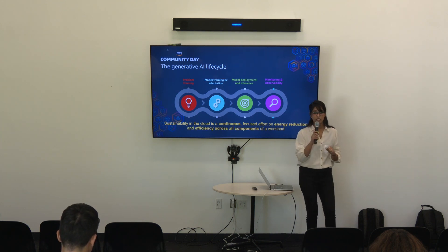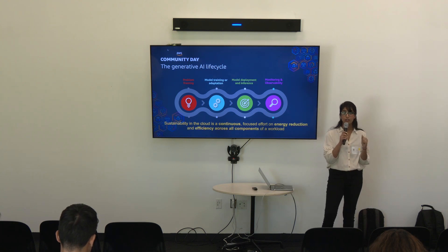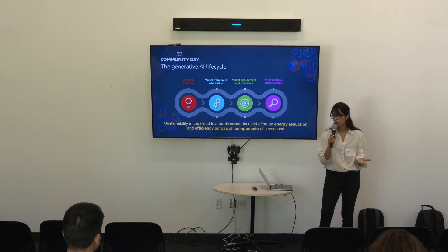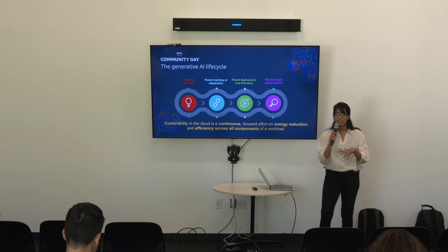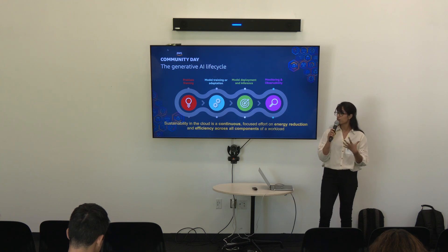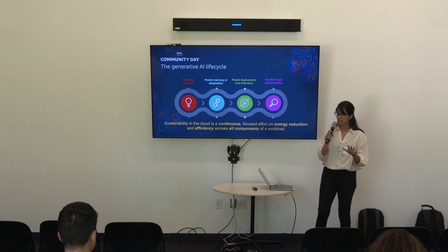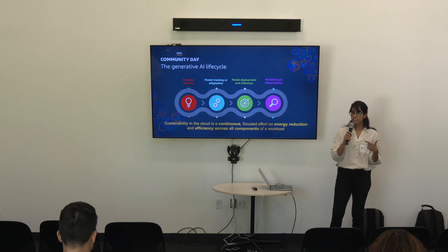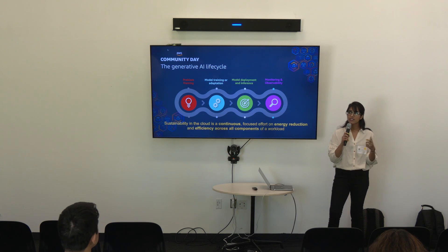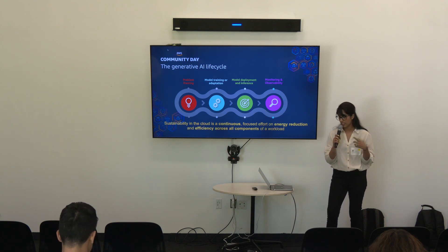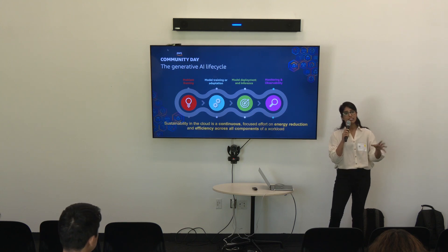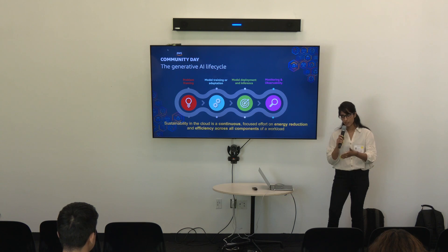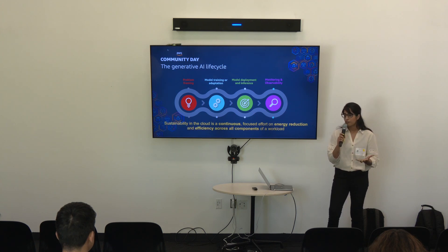Then you go into model deployment and inference. Once you've selected a candidate model and confirmed it's a good fit for your use case, you have to find the right infrastructure to deploy it — making sure that infrastructure is scalable and energy efficient, and that you integrate it into your existing pipelines and workflows. Finally, once the model is in production or a lower environment, you have to continuously monitor it to ensure it's producing the right, relevant outputs and to check whether any further customization or augmentation is needed.